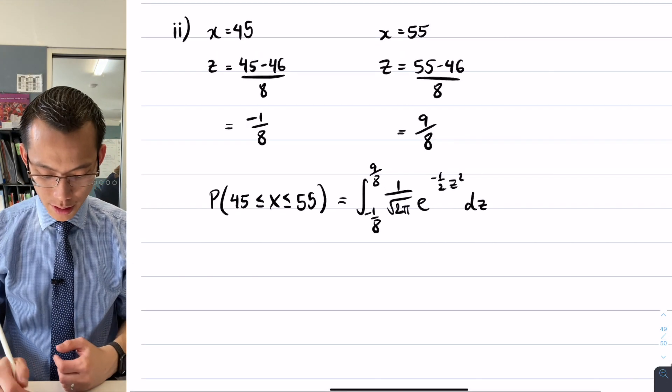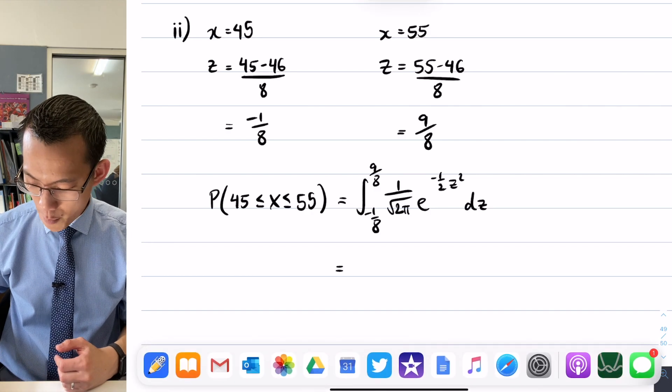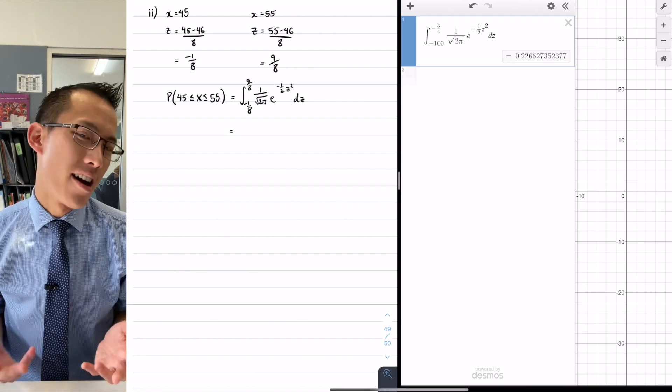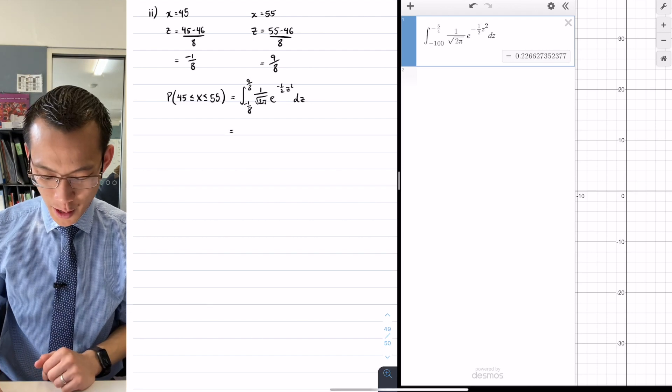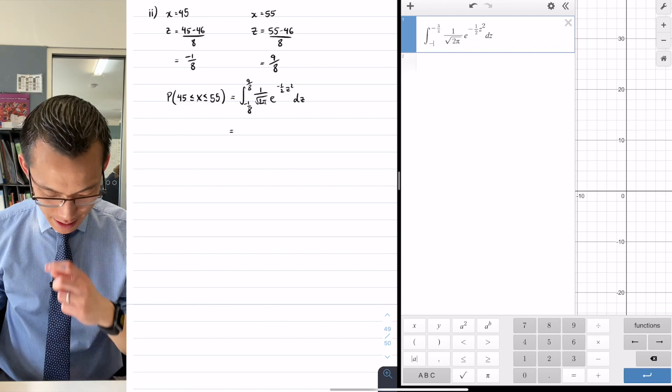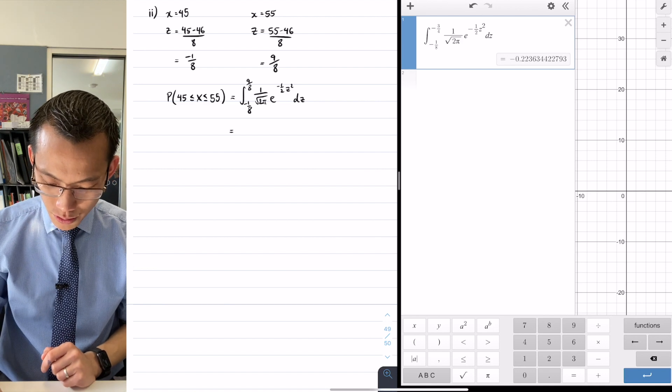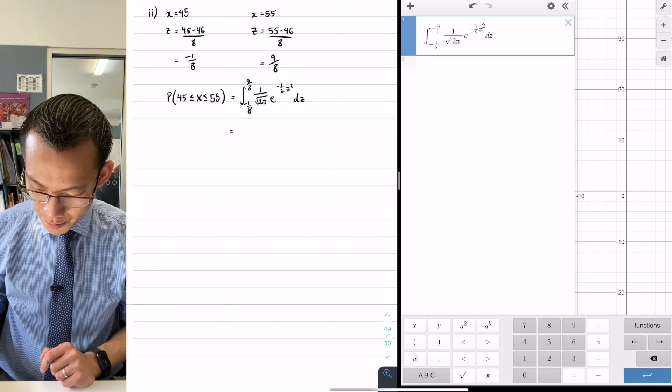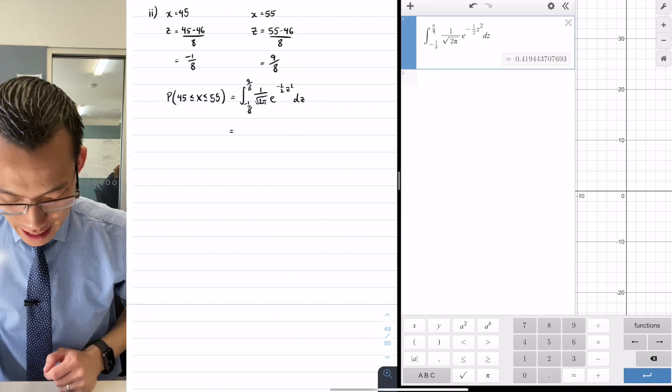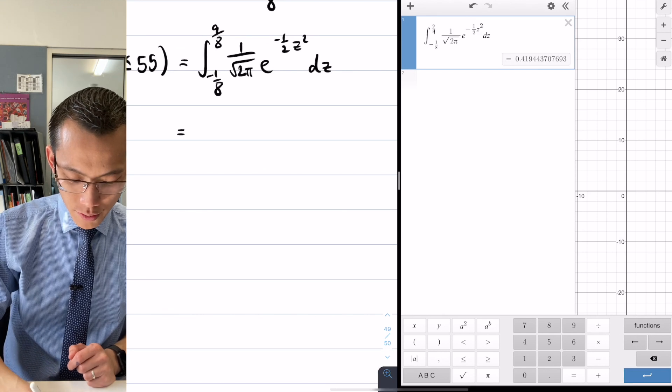That's going to give me a probability, so let's go ahead and go back over to my technology. Lucky for me, I've already done most of the hard work by putting in the integrand. Now I just need to change the boundary, so I'm going to change the bottom one—let's change that. It's negative 1 over 8, and then I will also change the upper boundary to 9 divided by 8. And I get this number here. So let's have a look. We'll jot this down and then we'll start to interpret it. So I've got 0.41944...